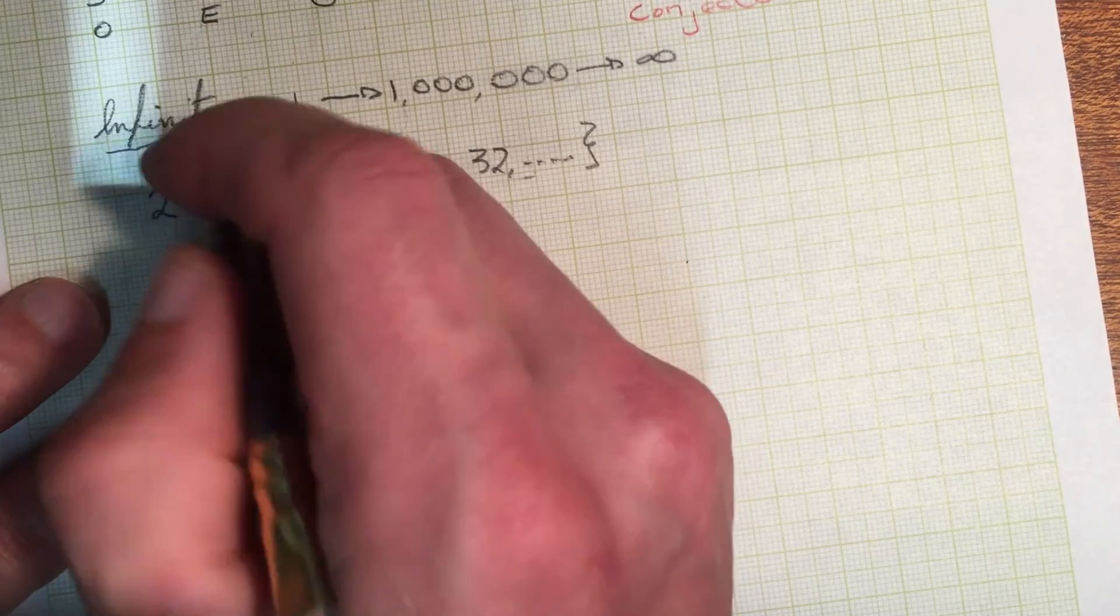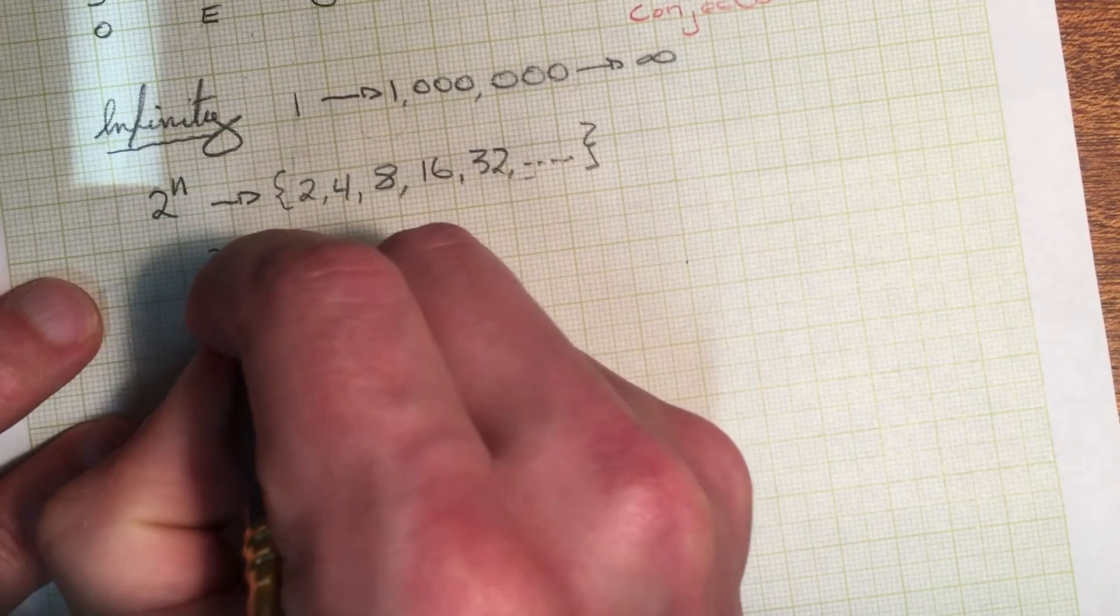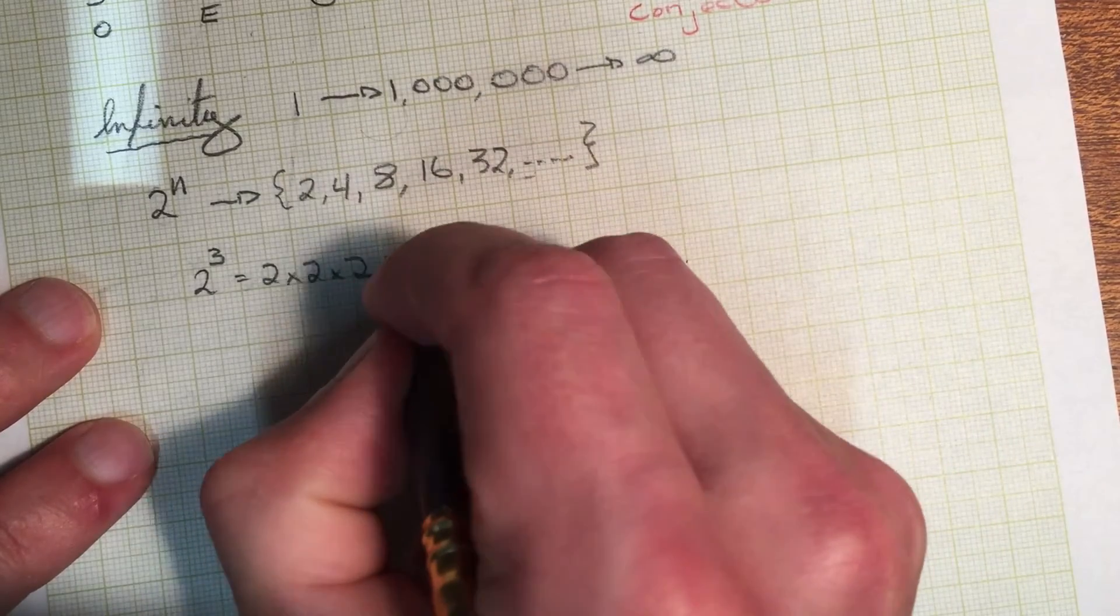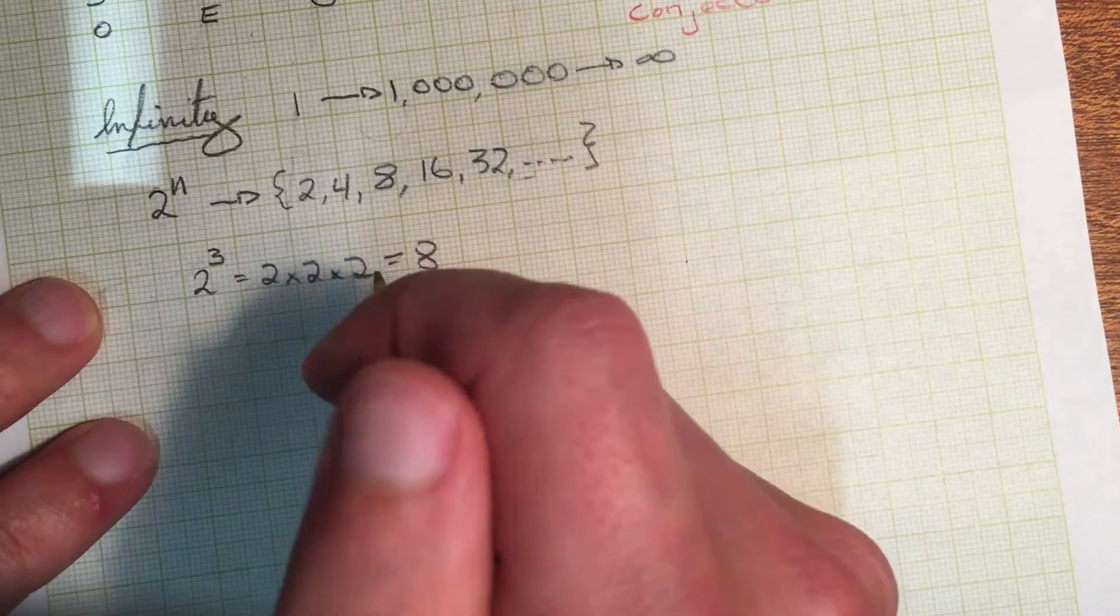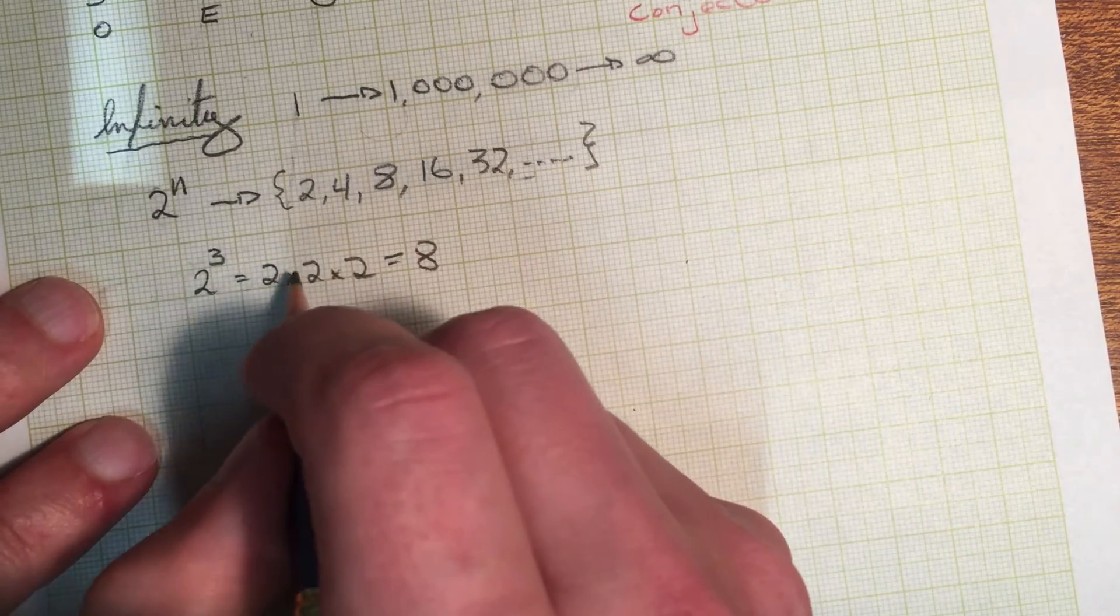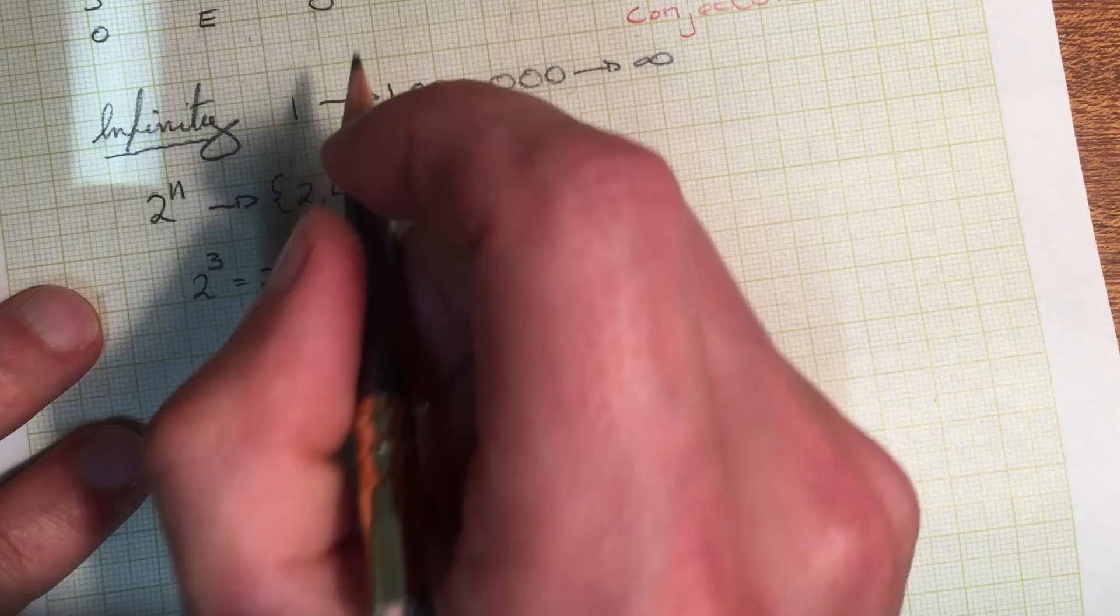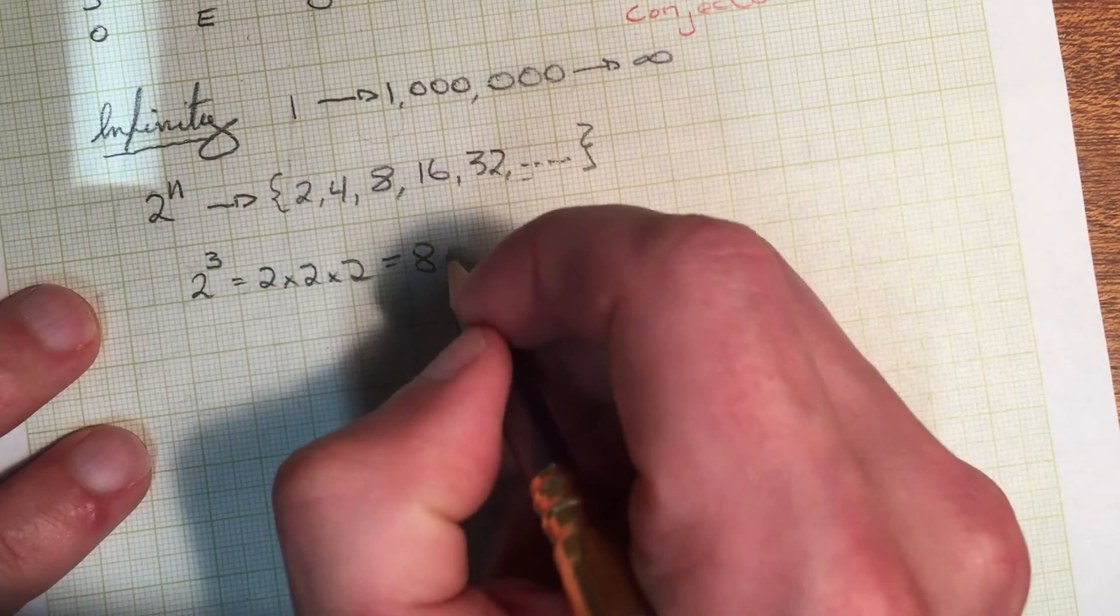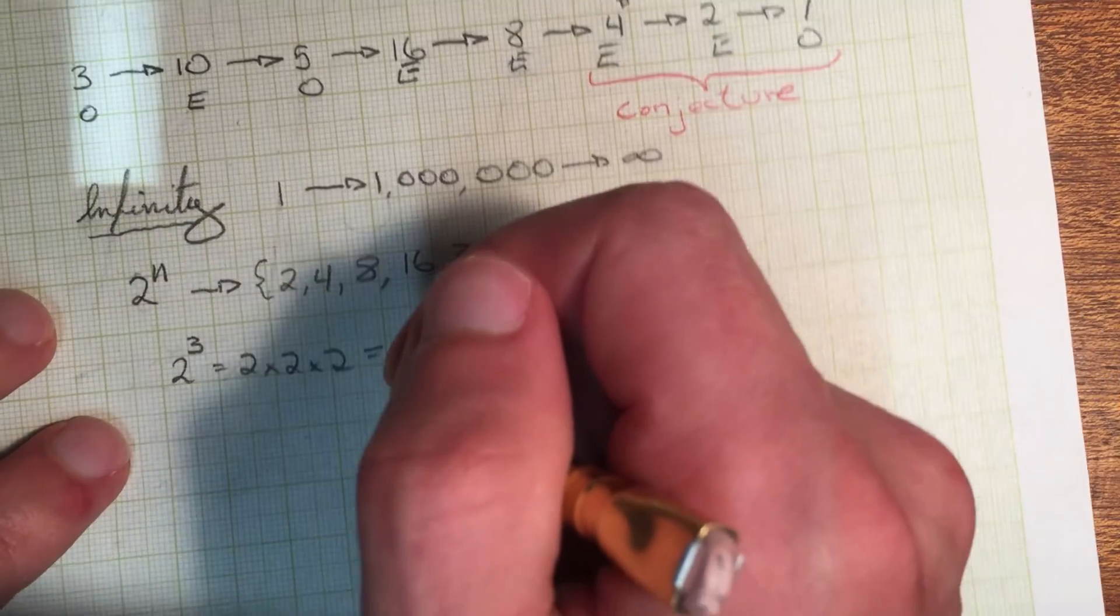Take two to the three, for example, two times two times two, well, you can see that that's eight. And if the number eight is made up of two times two times two, and all I'm doing is dividing by two, every time I take my even number and feed it into the conjecture...